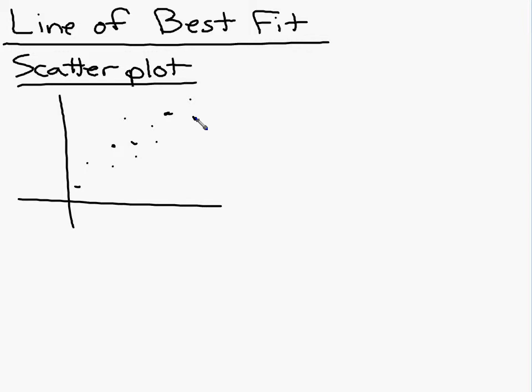If I have a bunch of points like that on an XY coordinate grid, that's called a scatter plot. Now what I want you to notice is doesn't it look like all the points are kind of going in the same direction? They're all kind of following the same general pattern. We would call this a positive correlation because it has a positive slope.